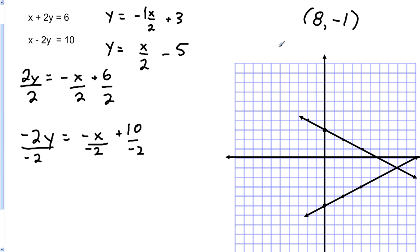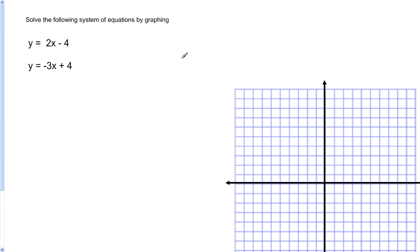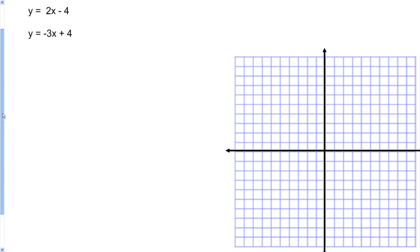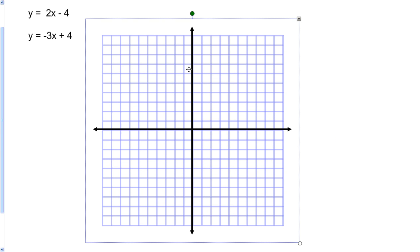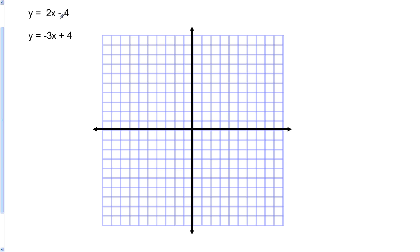Let's look at another example: solve this system of equations by graphing. This system is already in the form y equals mx plus b, which makes things easy — all I have to do is graph it. I'll move the graph over a bit. Starting with the first equation, the y-intercept is negative 4, so I count down: 1, 2, 3, 4. The slope is 2, which is 2 over 1, so rise 2, run 1.